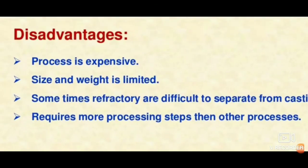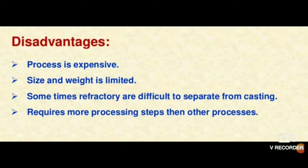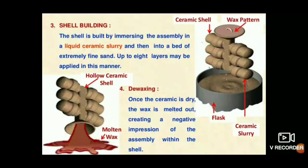Some disadvantages are also present. It is an expensive and time-consuming process. Size and weight are limited to around 5 kg. It requires more processing steps than other processes — wax must be injected, assembled into a tree, coated with ceramic slurry, and then molten metal poured and cooled — making it a lengthy process overall.